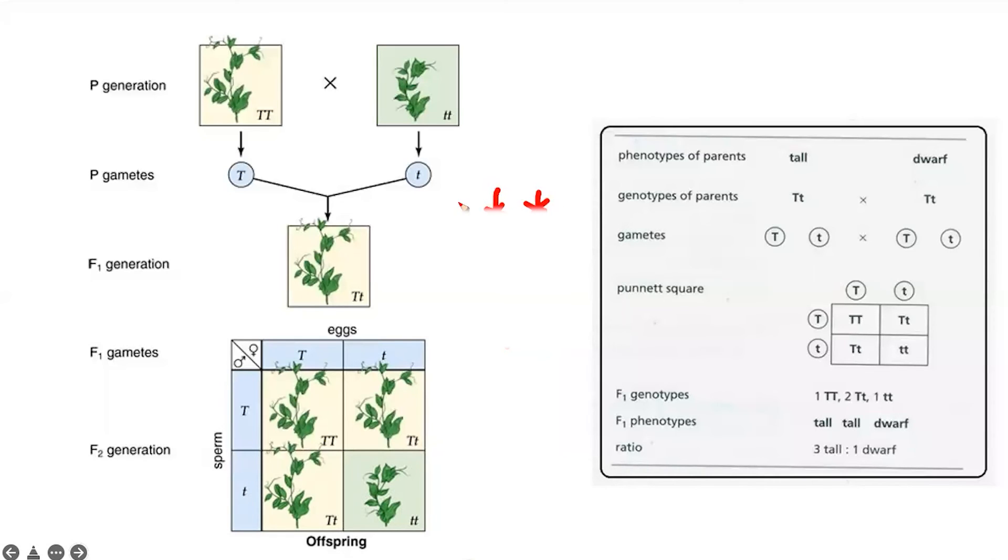Then we say that the true breeding plant has two alleles, capital T capital T, and the dwarf plant also has two alleles of the same gene, which is small t small t. Remember, capital T capital T, small t small t, capital T capital T are the same gene in the same location on chromosomes.